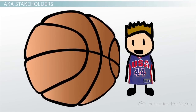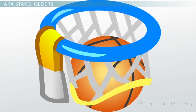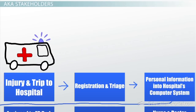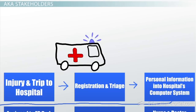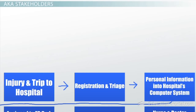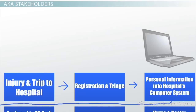Let's say you are shooting hoops with your buds. You go up to jam and you come down on the opponent's foot. Your ankle rolls and gives a great pop you really didn't want to hear. Your friends load you up and take you to the emergency room. You go through the process of registration and triage. Your personal information is sent to a system that holds data and your basic medical information such as vital signs, height, weight, and the symptoms you are presenting.